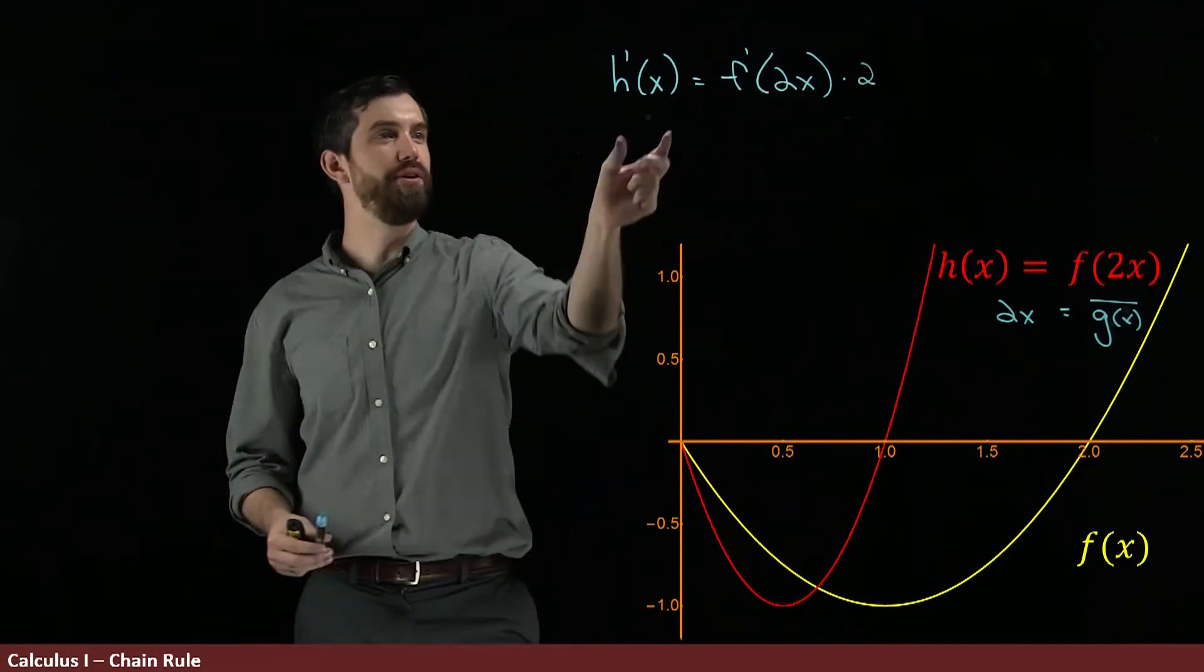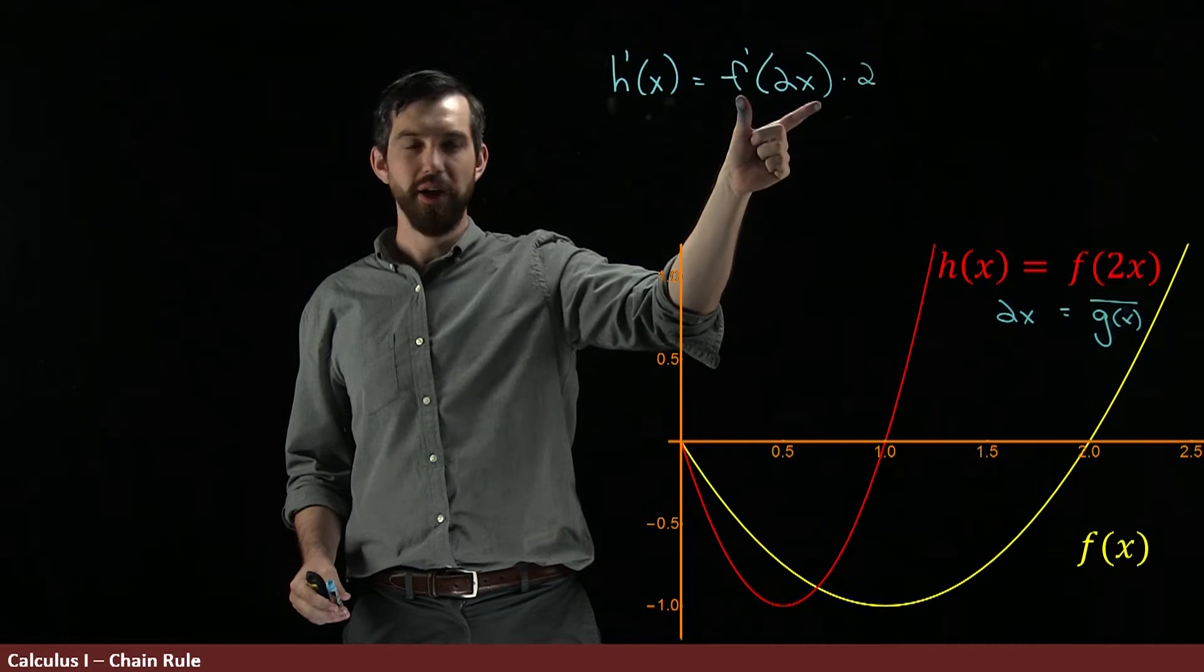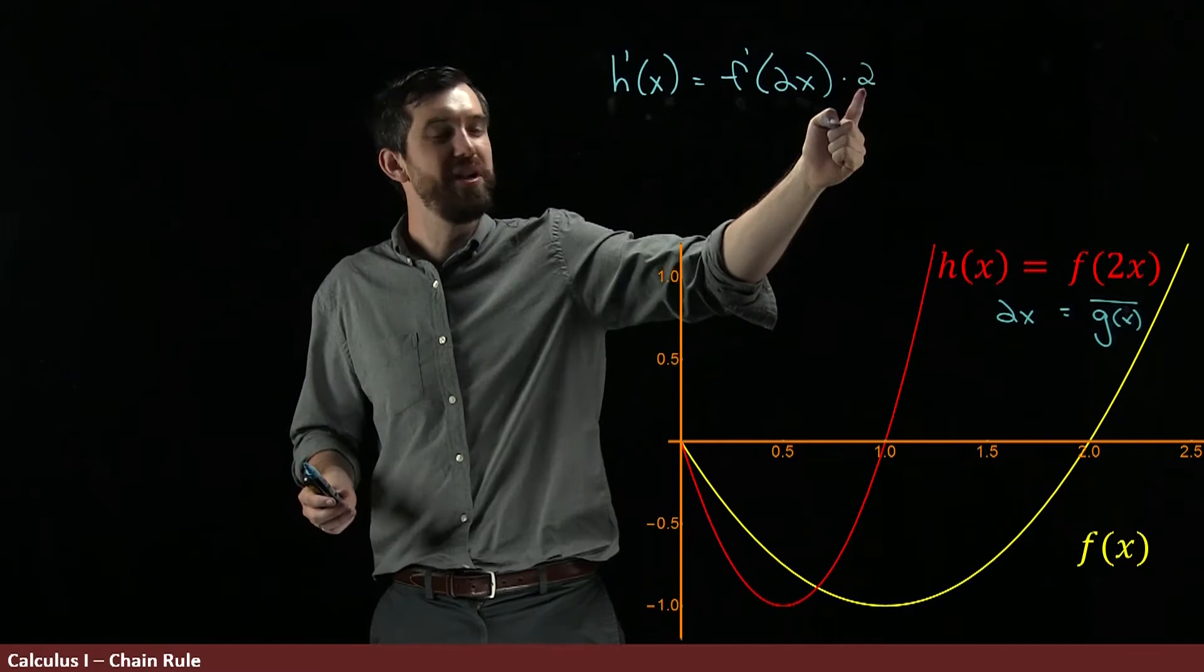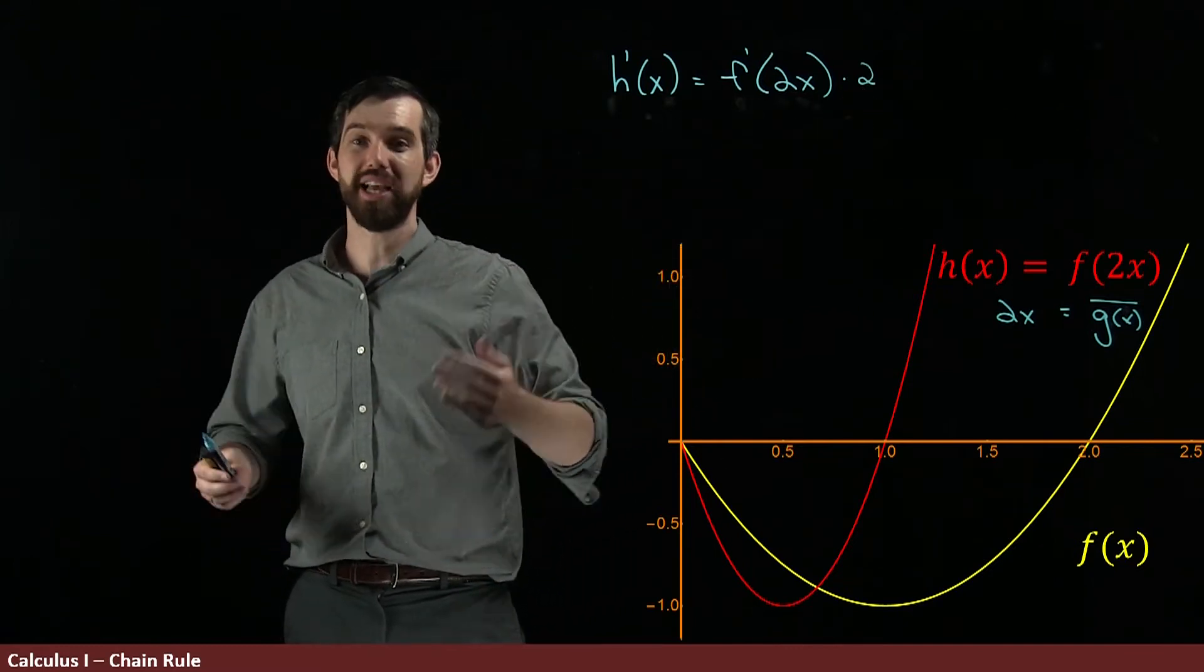So in other words, what we're saying here is that the derivative of h is just like the derivative of f, but there's this horizontal compression factor of the 2x at the inside, and then there's also another 2 that's multiplied on the outside, which is kind of interesting. So let's see how this works.